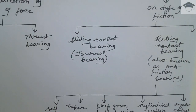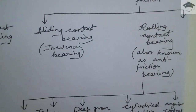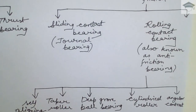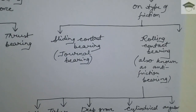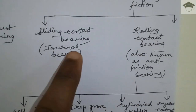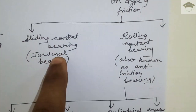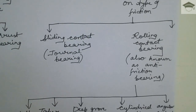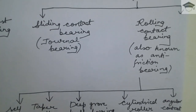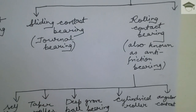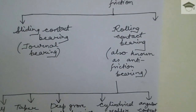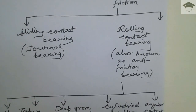Sliding contact bearing is also known as journal bearing. The term 'journal' refers to the portion of the shaft which is inside the bearing. Sliding contact bearing works on the principle of hydrodynamic lubrication. The contact area between the bearing and the shaft is much larger, and the load is supported by a lubricant film produced between the bearing and the shaft due to hydrodynamic lubrication. You can search for more details on hydrodynamic lubrication and journal bearing on YouTube.